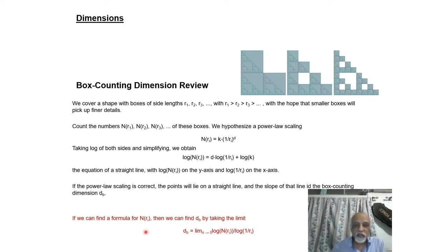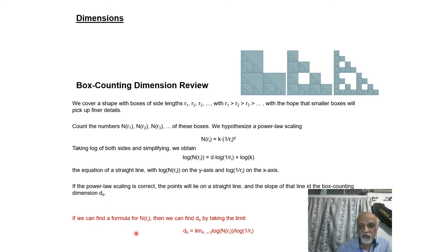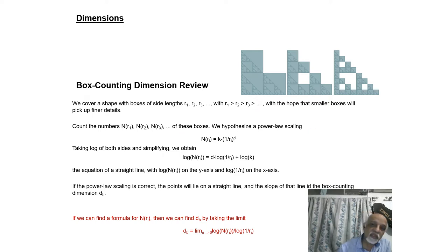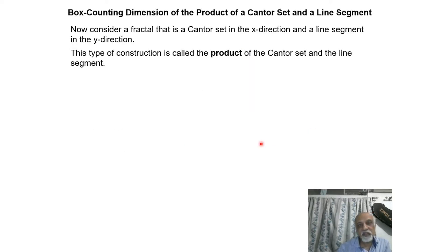To calculate the dimension, we take the log of both sides and simplify to get an equation of a straight line, where the slope gives you the dimension. The box counting dimension d_B is defined as the limit as r tends to 0 of log N(r) divided by log(1/r).